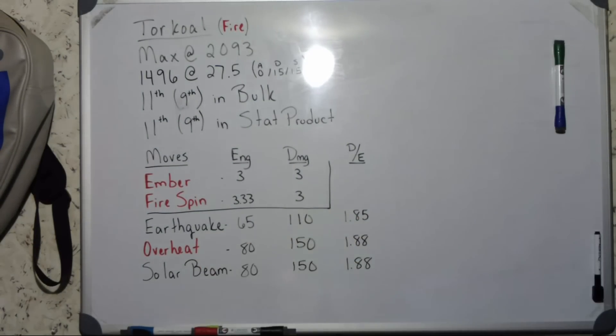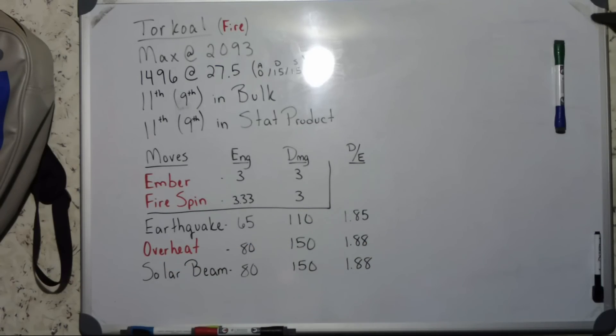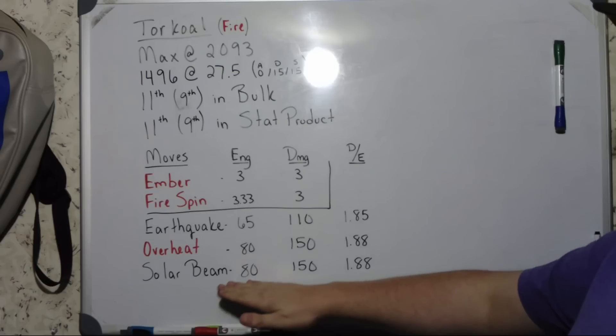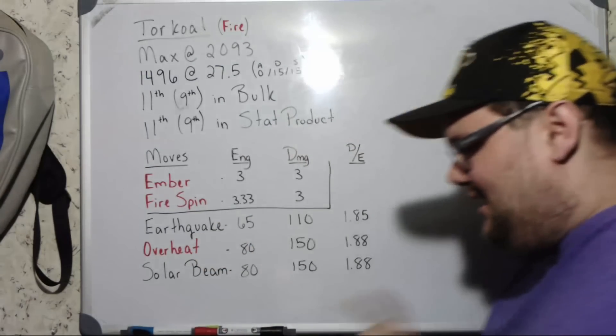Moving on to our charge moves, we do have Earthquake which is a massive move to Torkoal. Earthquake costing 65 for 110 damage with a 1.85 damage per energy ratio. We then have Overheat, our fire type charge move, costing 80 energy for 150 damage at 1.88 ratio. Lastly we have Solar Beam, costing 80 energy for 150 damage at 1.88 damage per energy ratio. The reason Solar Beam is interesting is...